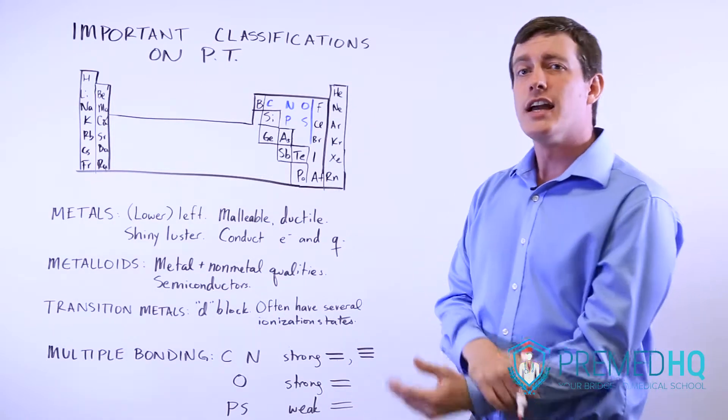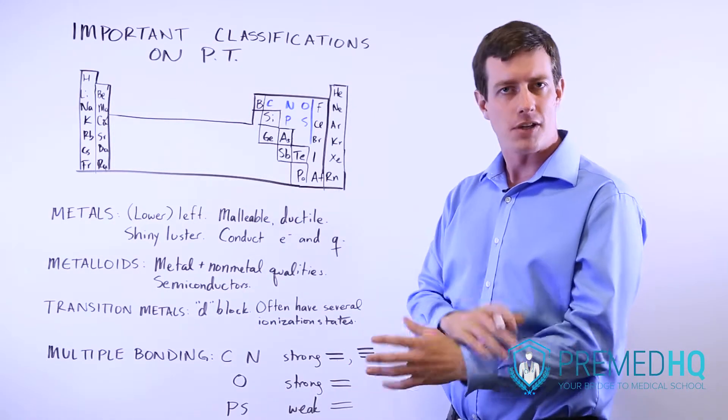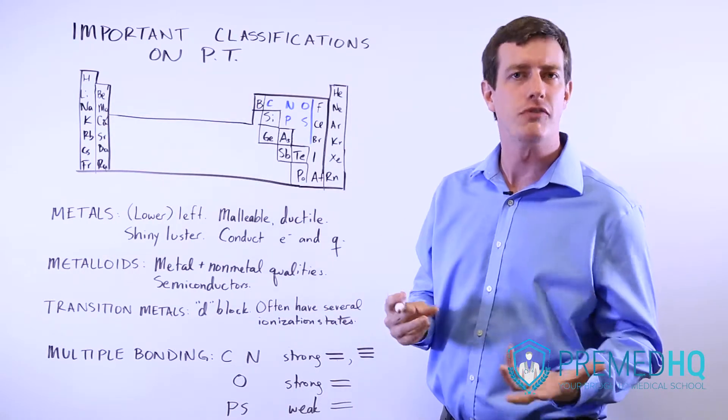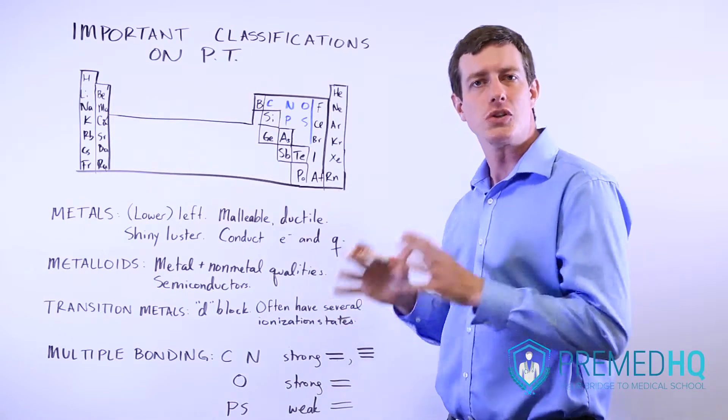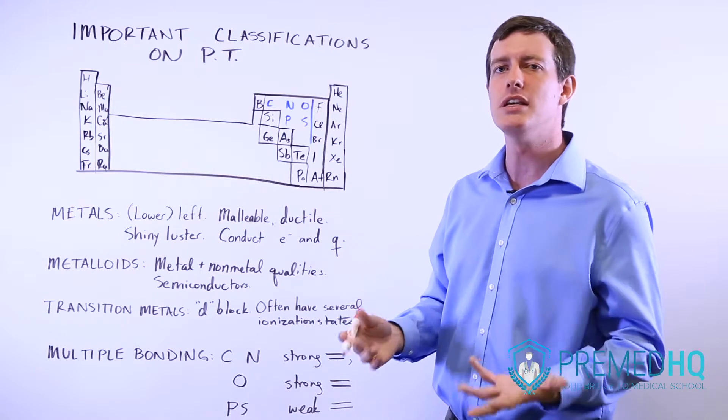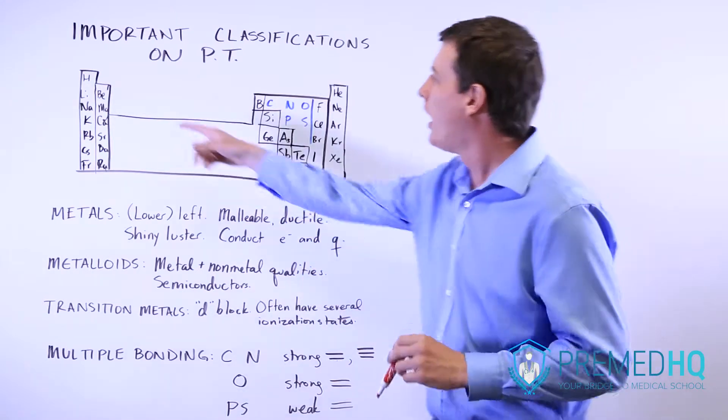And finally, it's good to be aware of things that are diatomic in their natural state, meaning that it's just something C2, for example, or H2, or something along those lines. The ones that are naturally diatomic and prefer to be diatomic are hydrogen...